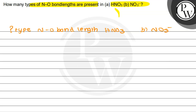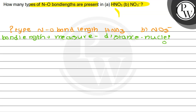What is the concept of bond length? Bond length is nothing but a measure of the distance between the nuclei of two chemically bonded atoms. That distance between the nuclei of two chemically bonded atoms is what we call bond length. Now we will see how many types of NO bond lengths are present in HNO3.